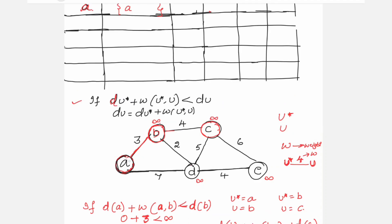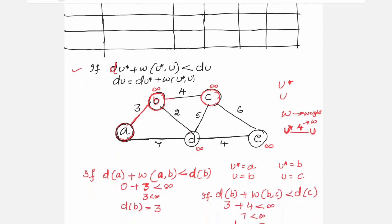For A reaching B: d(A) + w(A, B) = 0 + 3 < infinity — true, so update d(B) = 3. Similarly, A checks its connected node D. The weight on A-D is 7, so 0 + 7 < infinity — true, update d(D) = 7.